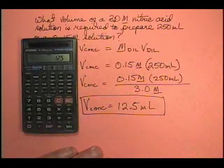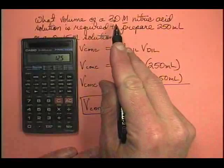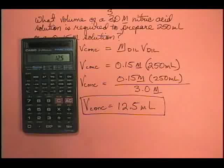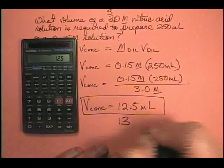How many sig figs are we good to? We're only good to, that's a three it doesn't look like a three but that's a three. We're good to two sig figs so this is going to be 13 milliliters.